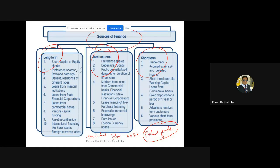I'll come to the definitions of each source of finance later, but let me clarify the criteria to bifurcate right now. Medium-term sources generally cover a one-to-three-year period. If you are seeking a source of finance ranging from one to three years, it's called a medium-term source. If you are seeking finance for more than three years, those are called long-term sources of finance.